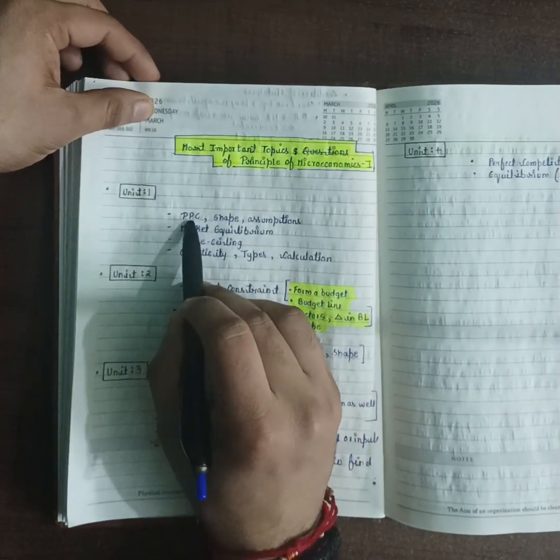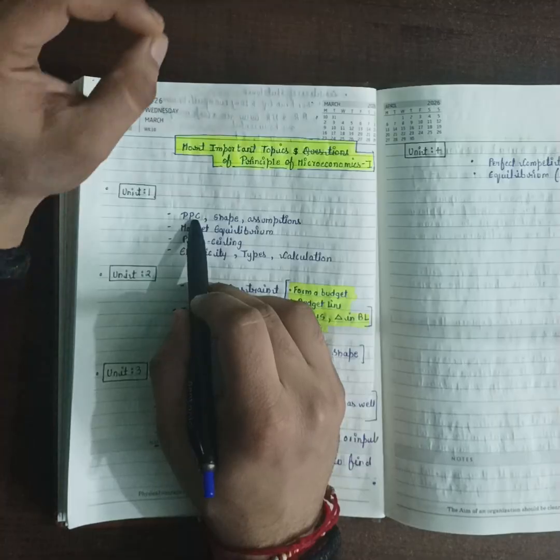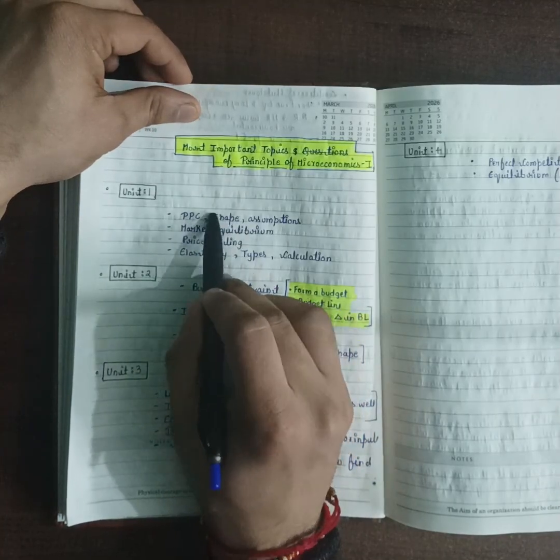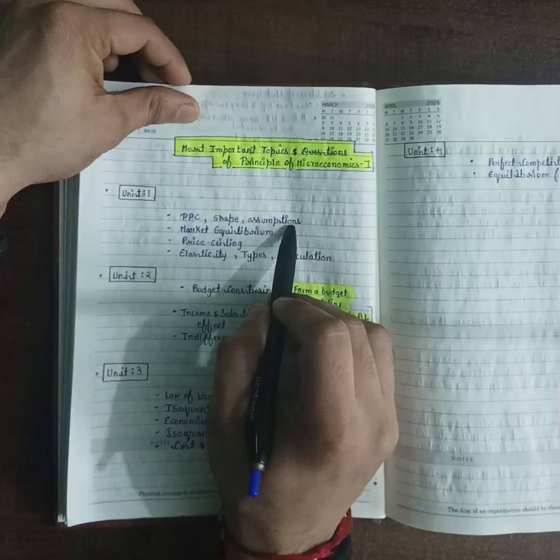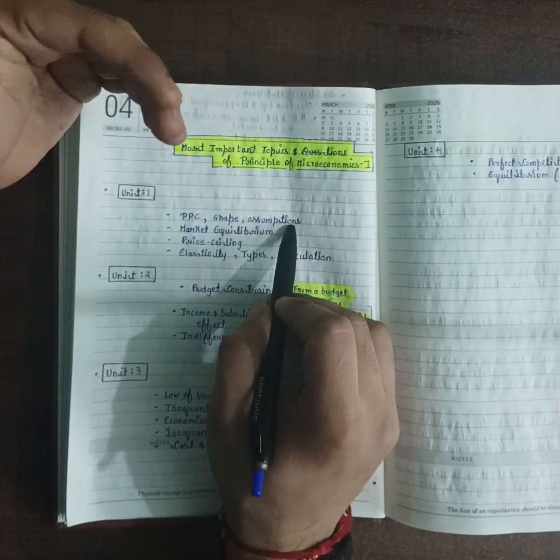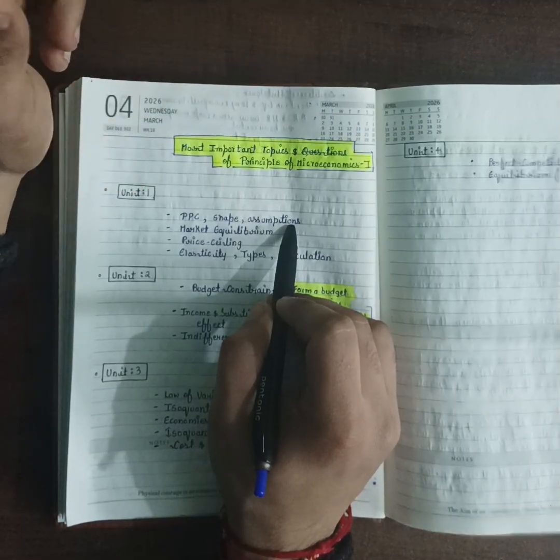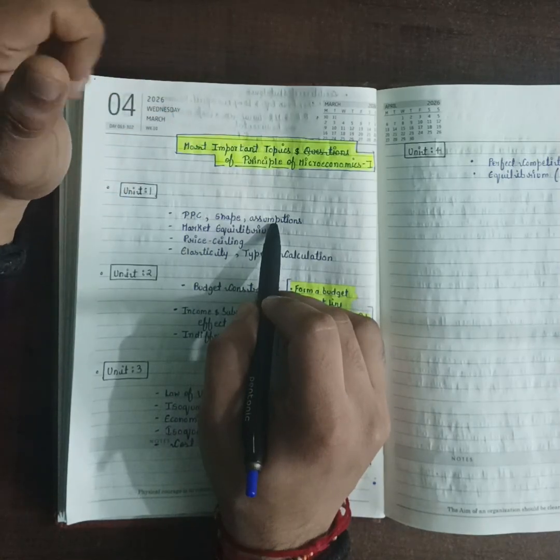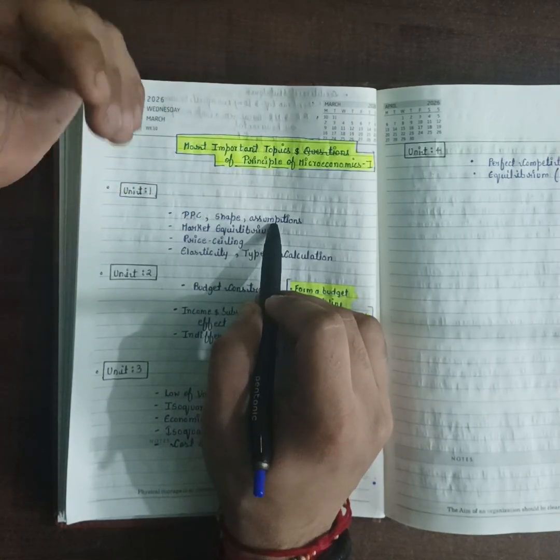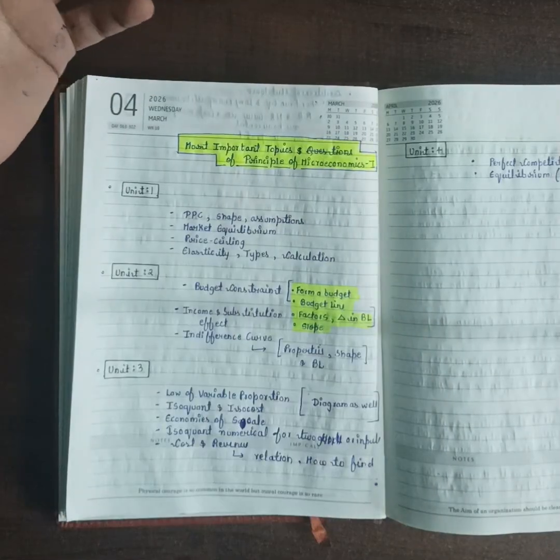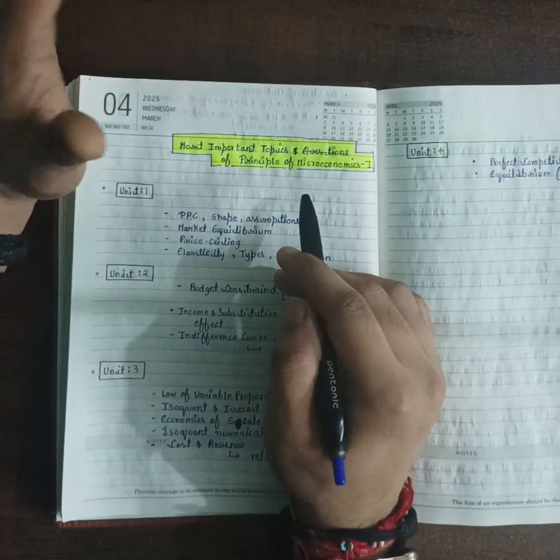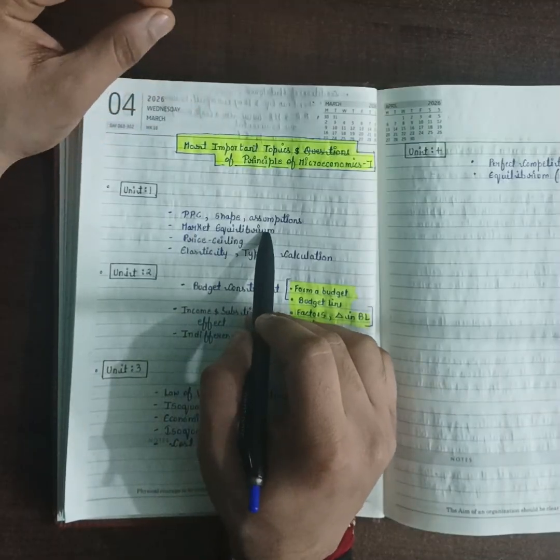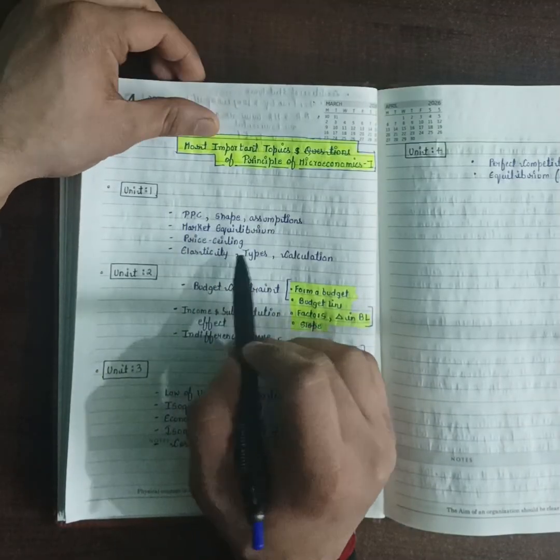From Unit 4 first: PPC or PPF Production Possibility Curve - very important, one question absolutely coming in PPC. You have to do shape of PPC and assumptions of PPC. Second, market equilibrium - important. Price ceiling - very important. Elasticity types and calculation - very important. All types of elasticity, then how many types there are in terms of perfect elasticity.